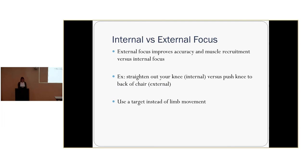Internal versus external focus for cues is an important one. An external focus improves accuracy and muscle recruitment versus an internal focus. This applies to motor learning for the healthy athlete and also to a patient who's had a stroke. For example, if somebody is walking and not extending their knee through stance phase, it's tempting to say 'make sure you straighten out your knee' — that's a very internal cue. Instead, tell them 'try to push your knee back like you're going to push it to the back of the chair.' Another example: if their contralateral limb isn't taking a long enough step, instead of 'take a longer step,' say 'step past your opposite foot' — that's an external cue.